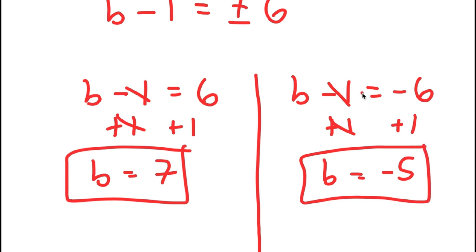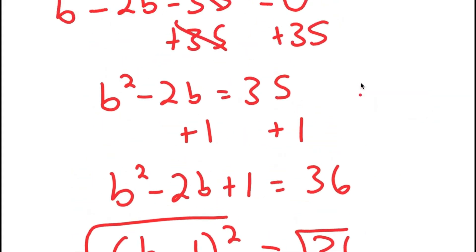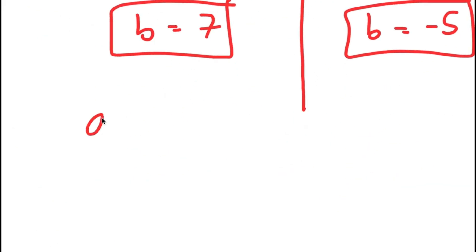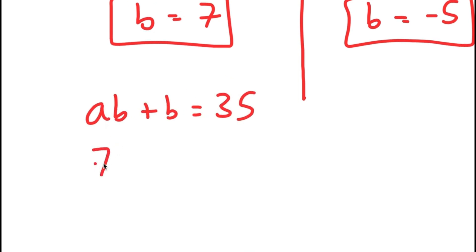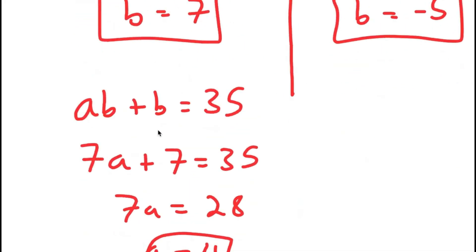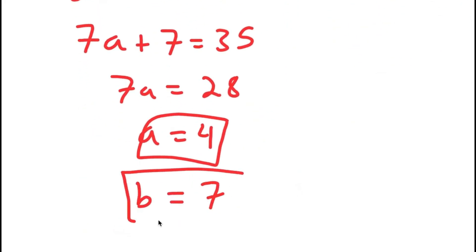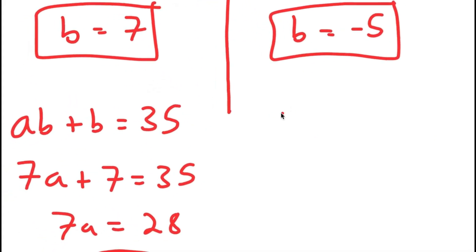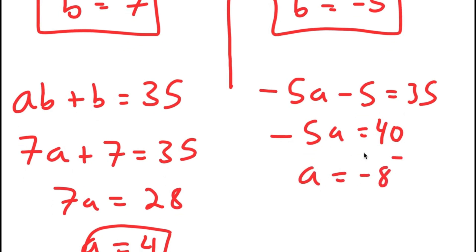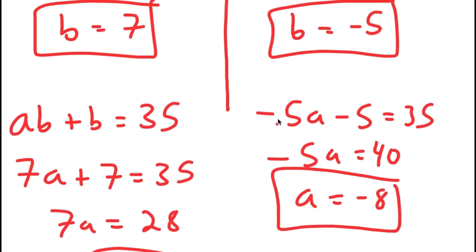Now from here, I plug back into AB plus B equals 35. If B equals 7, I get 7A plus 7 equals 35, meaning 7A equals 28 and A equals 4. So if A equals 4, then B equals 7 — this is one solution. And if B equals negative 5, I get negative 5A minus 5 equals 35, meaning negative 5A equals 40 and A equals negative 8. So if B equals negative 5, then A equals negative 8. These are my two solutions.